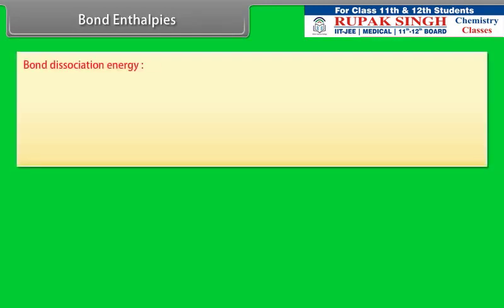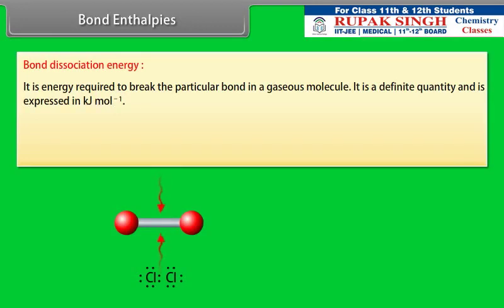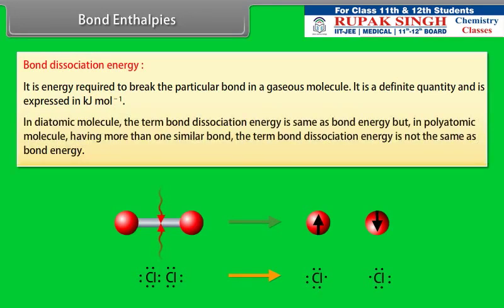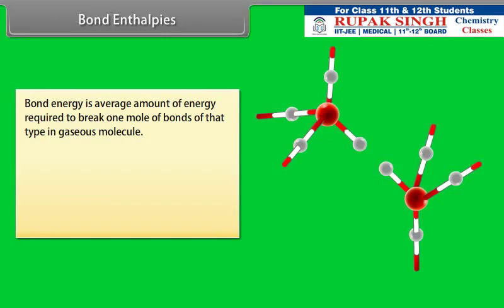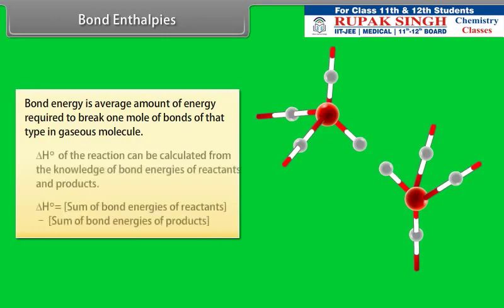Bond enthalpies: bond dissociation energy is defined as the energy required to break a particular bond in a gaseous molecule; it is expressed in kilojoules per mole. In a diatomic molecule, bond dissociation energy is the same as bond energy, but in a polyatomic molecule with more than one similar bond, they are not the same. Bond energy is the average amount of energy required to break one mole of bonds of that type in a gaseous molecule. ΔH° of a reaction can be calculated from the bond energies of reactants and products.